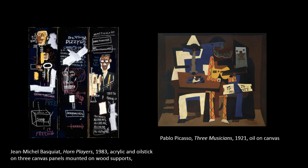His first exhibition, done under the name SAMO at the Times Square Show — an exhibition in June 1980 that marked the genesis of the 80s art movement — was followed by an invitation to exhibit in the New York New Wave, a group show of 1,600 works by 119 artists that opened at PS1 on Valentine's Day, affectionately called the armory show of the 1980s. Almost immediately afterward, the young Basquiat, at just 20 years old, was invited to exhibit his first solo show in Modena, Italy.